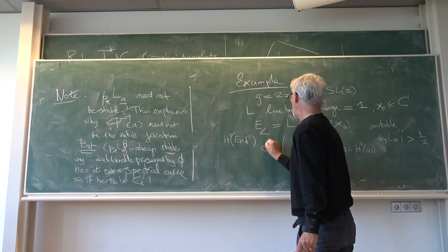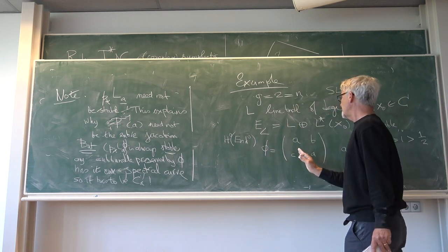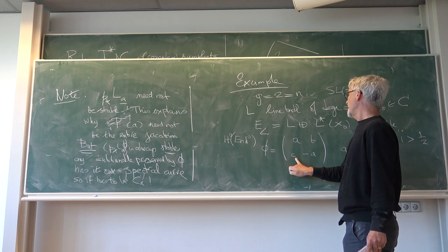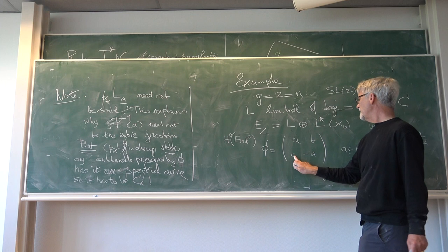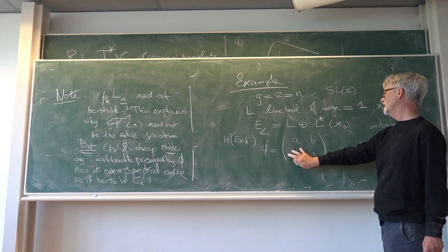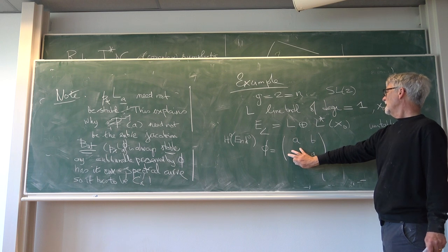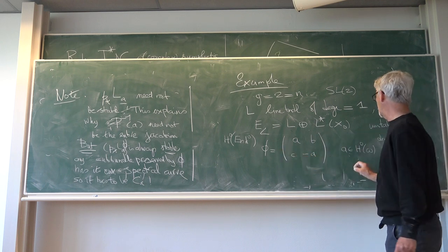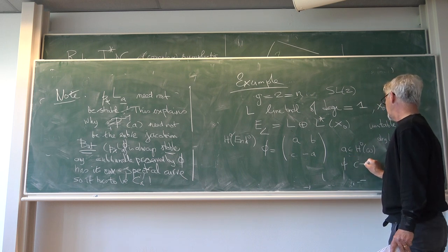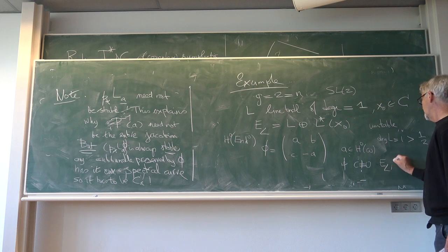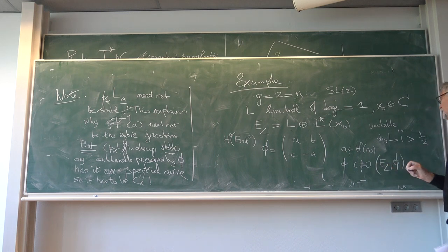But such a phi, when does it fix L when C is 0? So, because C varies in a line bundle which has sections, you can make the calculations, this is one-dimensional. A generic section will have C non-zero. If C is non-zero, then EL phi will be stable.